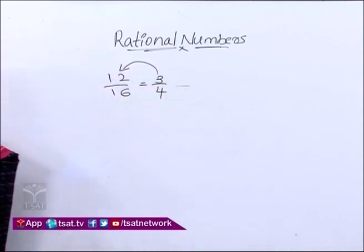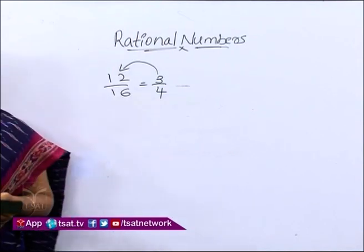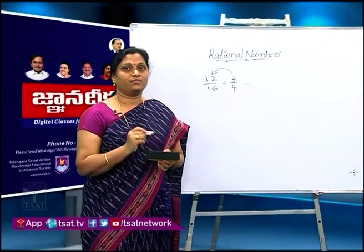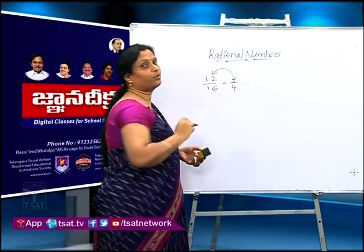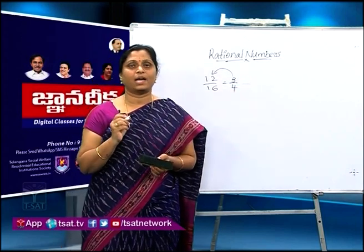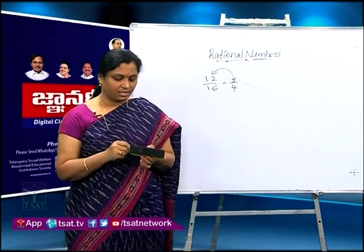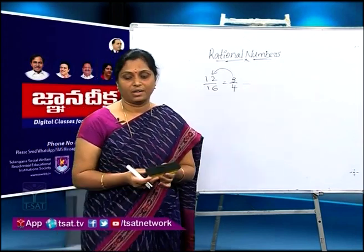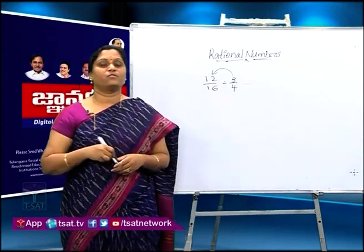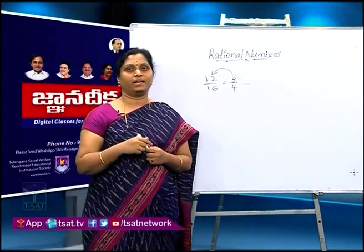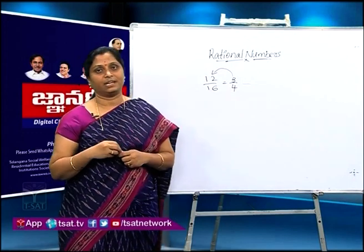Then what is the standard form? The standard form of a rational number is a rational number of the form p/q where p and q both have no common factors. That is the standard form of a rational number. You can take your own examples. This is about the standard form of a rational number.